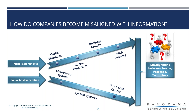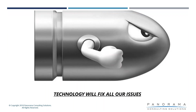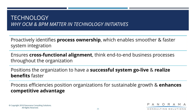There's a misalignment between people, process, and technology, and leadership finally signs the budget for technology — hearing about the pain points — thinking technology is going to fix all the problems. But that's not the case. This is why OCM and BPM matter for a technology initiative. It ensures process ownership, alignment across functions, and those silos go away because technology forces integration — which is good for proactive continuous improvement. It also ensures successful go-lives. Some organizations we talk to implemented four years ago and haven't gotten the benefits of the system. They skipped the process work and are now coming back for it.